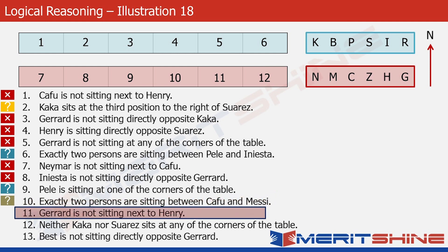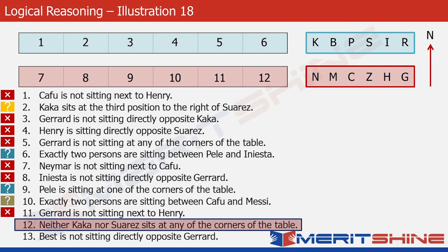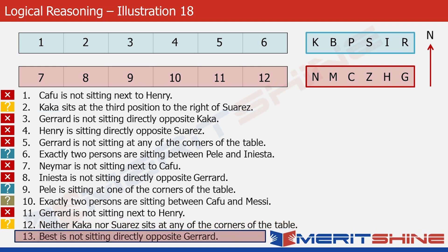Statement 11: Gerard is not sitting next to Henry — again a negative statement. Statement 12: Neither Kaka nor Suarez sits at any of the corners of the table — now this is interesting. We already have statement 2 which was about Kaka and Suarez, and this again is about Kaka and Suarez — it's a good enough hint. Statement 13: Best is not sitting directly opposite Gerard — again a useless statement at this stage. So basically we went through everything and realized that the only combination that will work in the beginning is statements 2 and 12. The combination of 6 and 9 could also have worked to some extent, but 2 and 12 is definitely better.